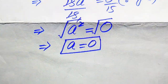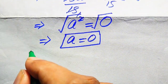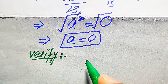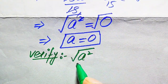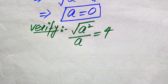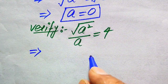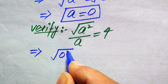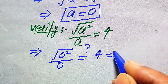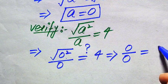So a = 0 is the first value we get in this method. Now we need to verify whether this value satisfies the original equation or is an extraneous root. We copy down the given equation: √(a²) / a = 4, and substitute a = 0 into the left-hand side. We get √(0²) / 0 = 0/0.